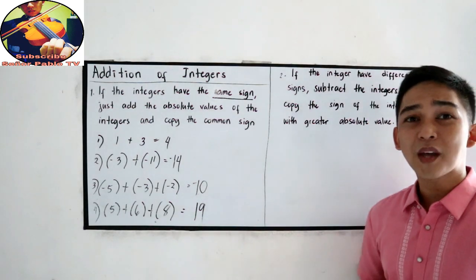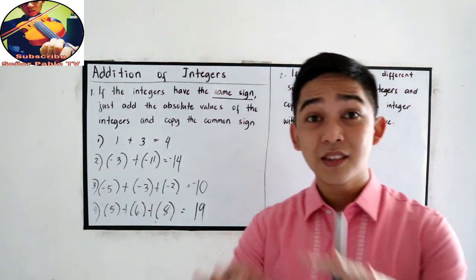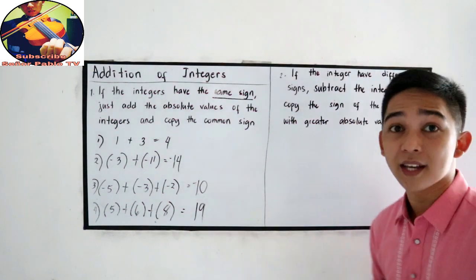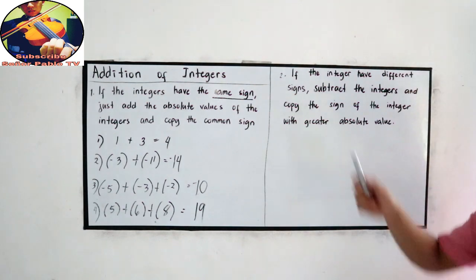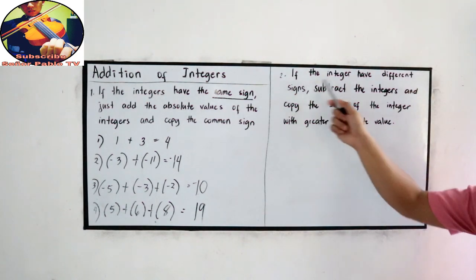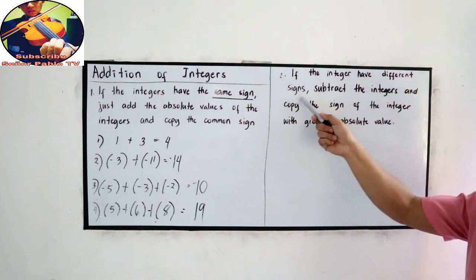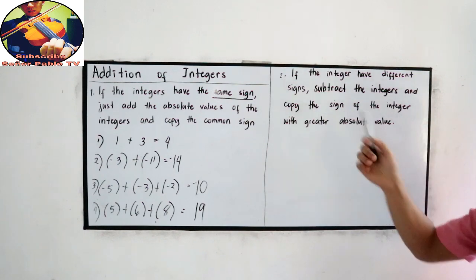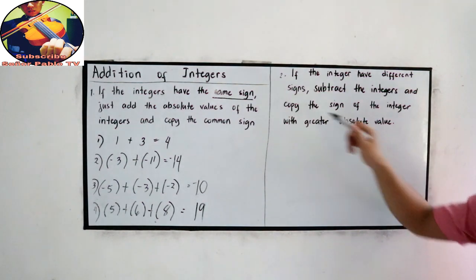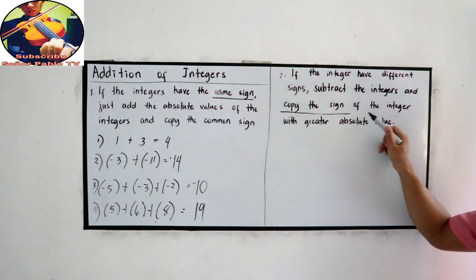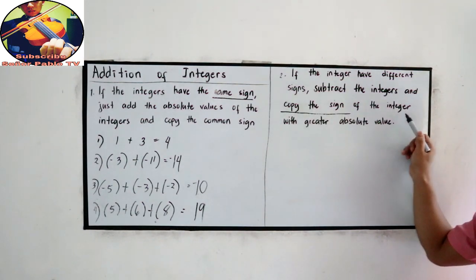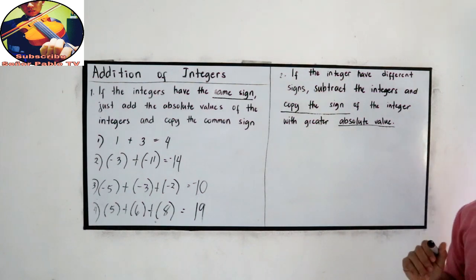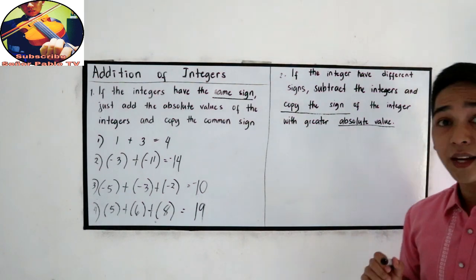Next, what if we have different signs? Our rule is: if the integers have different signs, subtract the integers and copy the sign of the integer with the greater absolute value. Now let us try.